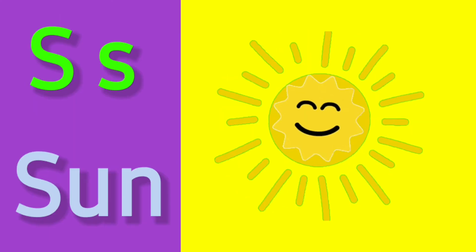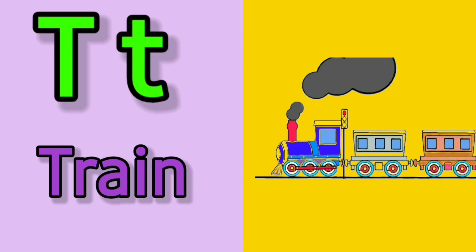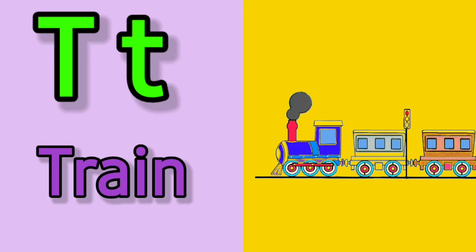S for sun, sun means suraj. T for train, train means railgari.